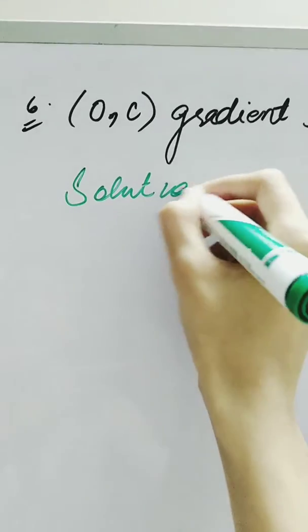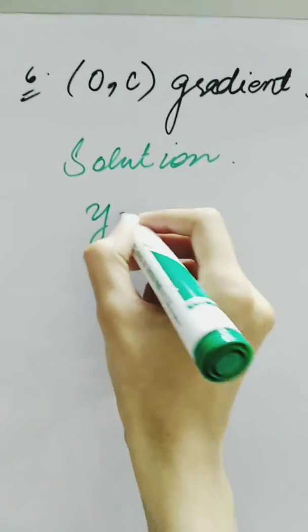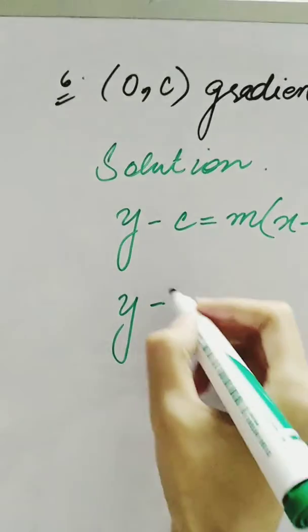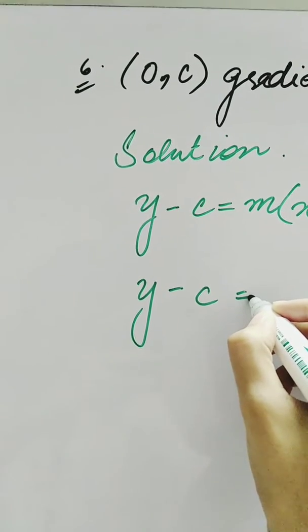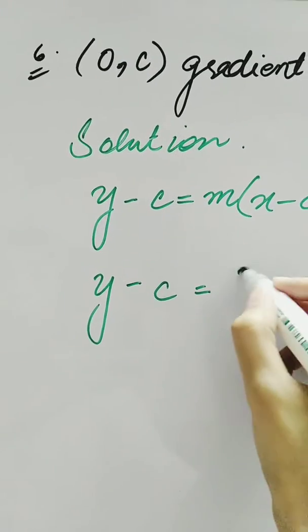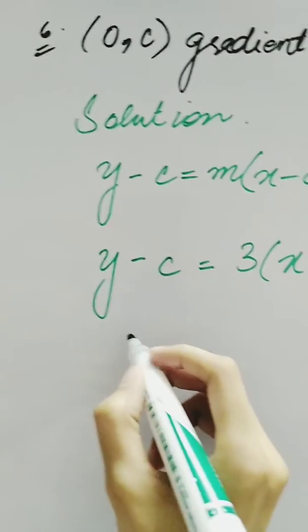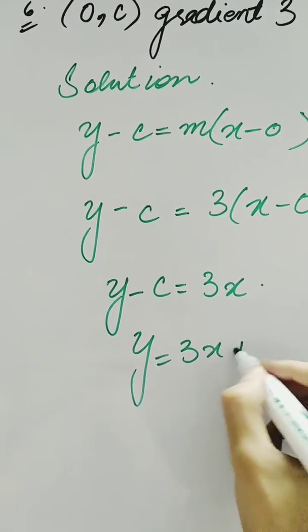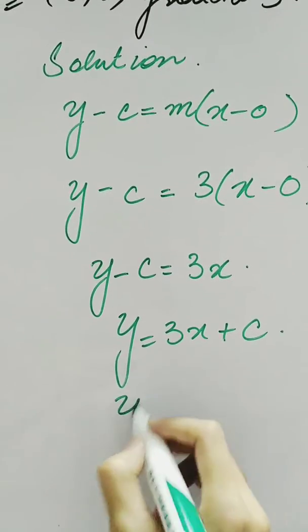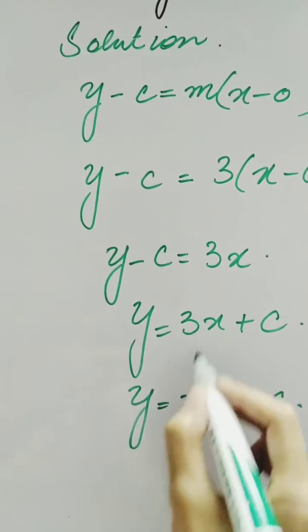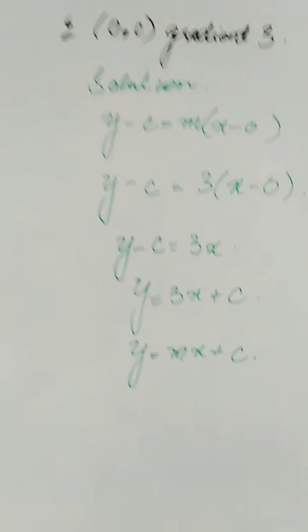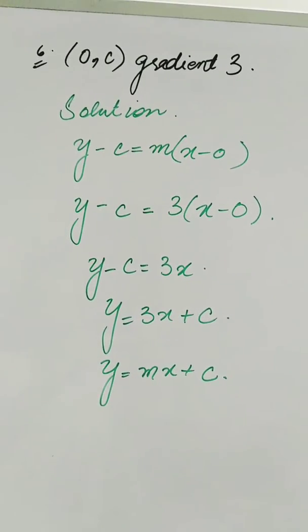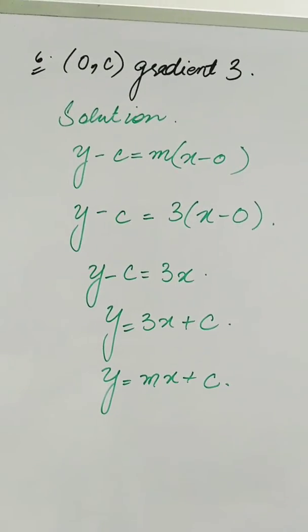We have another question in which the coordinates are given as (0, c) and gradient is 3. Putting these values into the equation of line: y - c = 3(x - 0), so y - c = 3x, giving y = 3x + c. This is in the standard format y = mx + c, and since the x coordinate is 0, this line is parallel to the y-axis.